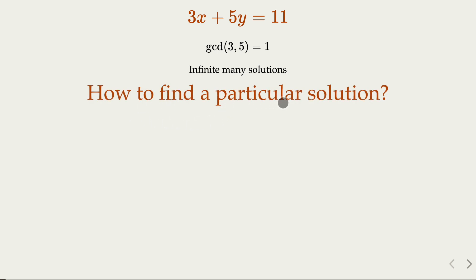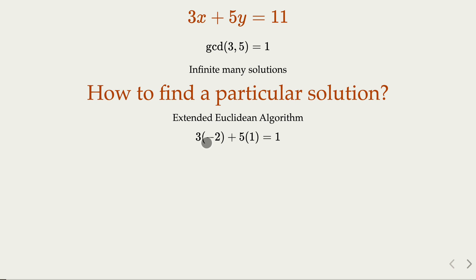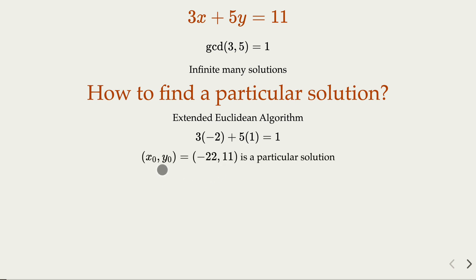How do we find a particular solution? We use the extended Euclidean algorithm to find the GCD. In this case it's trivial: negative 2 and 1 would be a particular solution. And since we have 11 on the right, we multiply by 11, giving us a particular solution.